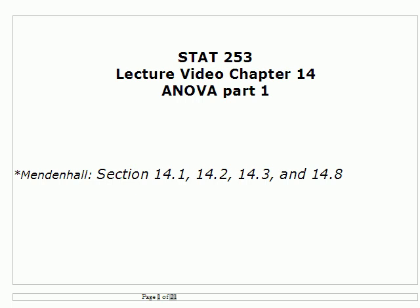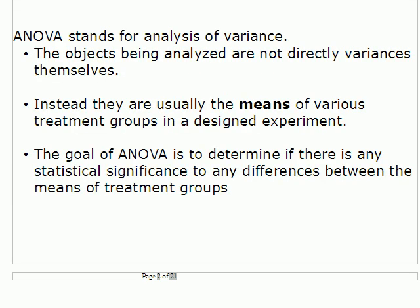This is the first of two lectures on analysis of variance for chapter 14 for Stats 253. The title ANOVA stands for analysis of variance, and it is a little bit misleading — the objects being analyzed are not variances; instead they're the means of various treatment groups in a designed experiment.